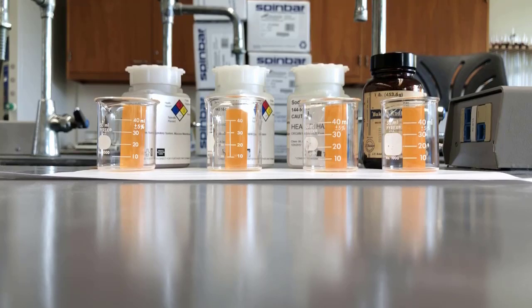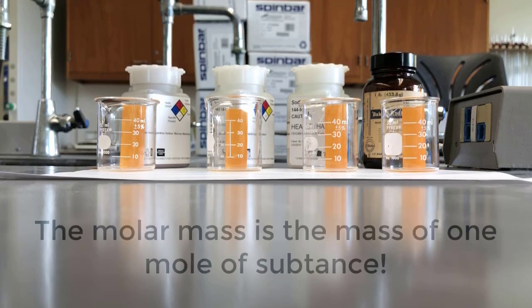So what I'm going to do, if you think about it for copper, if you look on your periodic table, it says that the molar mass of copper is 63.55 grams. So in order to get one mole of material, you have to weigh out 63.55 grams, and that'll give you one mole.